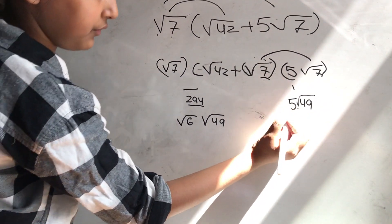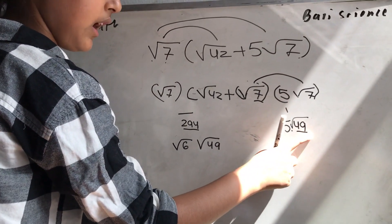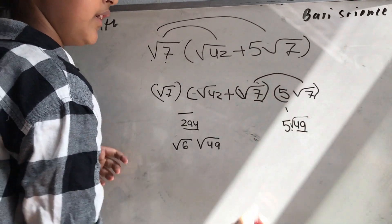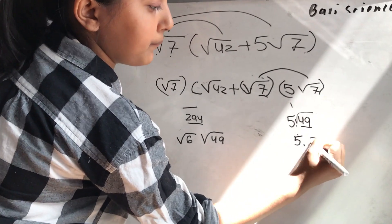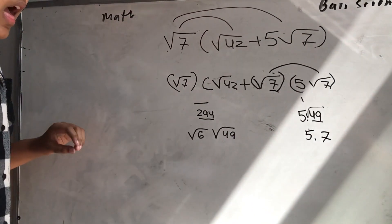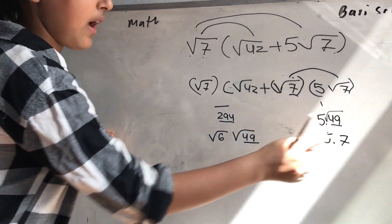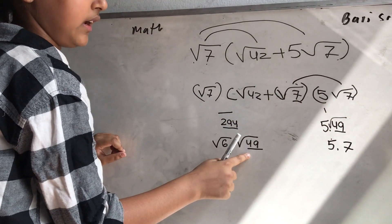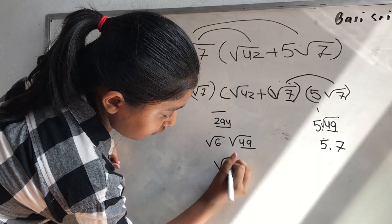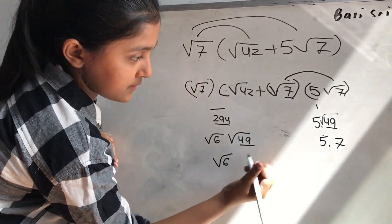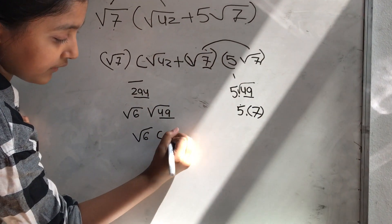So then you have to find the factors for 49. It's 7. So you have to do 5 times 7. You also have to find the factors for 49 just like here — it's 7. So you put root 6 in parentheses and root 7.